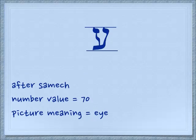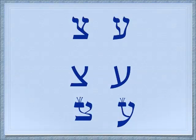The first letter we're going to learn today is the Ayin. You will find it right after the Samech, which is the round letter that we learned earlier. Its number value is 70 and its picture meaning is the eye.